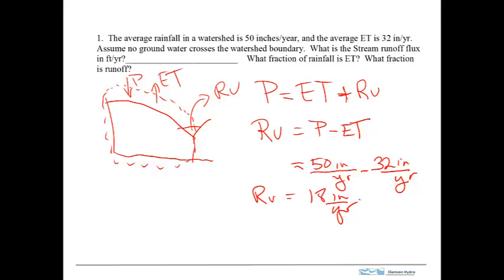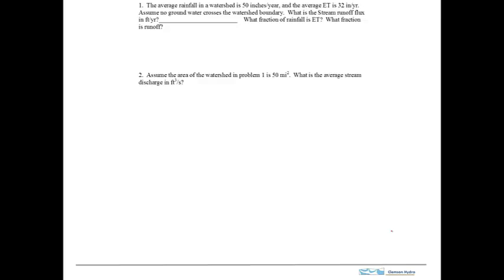And then I'm asked what fraction of the rainfall is ET. Well, ET is 32, precipitation is 50, so the fraction ET over P would be 32 over 50, which is 0.64. So the ET is 64% of the rainfall, and that's a typical value.